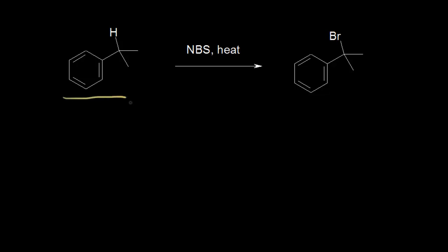Here is my alkyl benzene — a benzene ring with an alkyl group attached. This carbon is at the benzylic position, so this would be a benzylic hydrogen attached to that carbon, which is necessary for this reaction. If we add some NBS and some heat — this is a free radical mechanism, so we usually add something to initiate it, like peroxide — we get a bromine added on to the benzylic position in the place of that hydrogen.